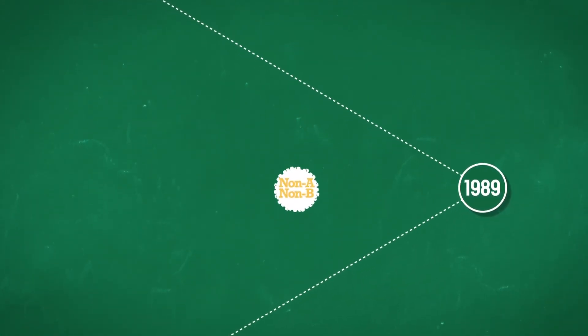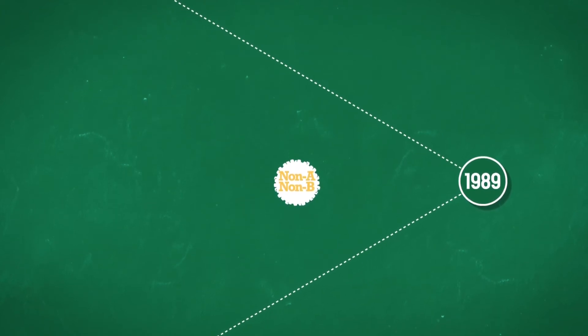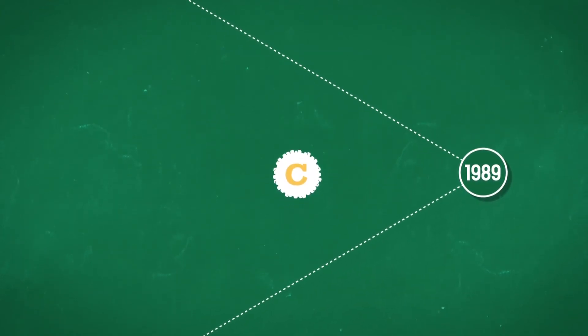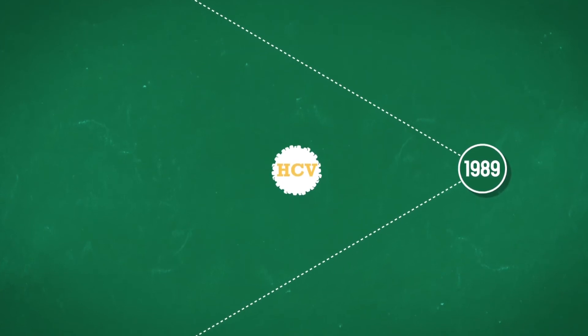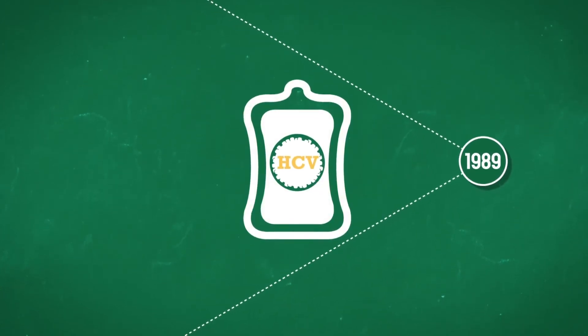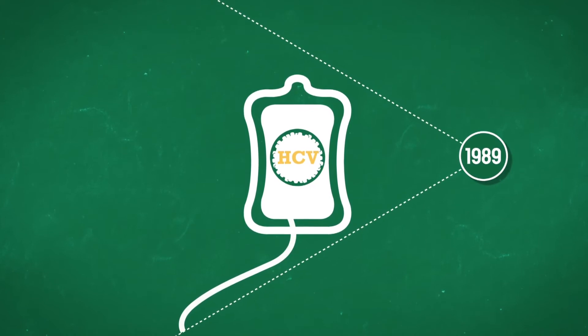In April 1989, non-A, non-B was identified and became known as hepatitis C virus, or HCV. It was known to travel via the bloodstream and therefore could be transmitted by blood transfusion.